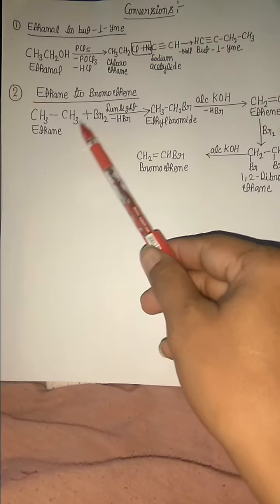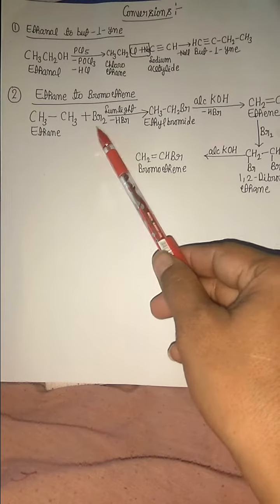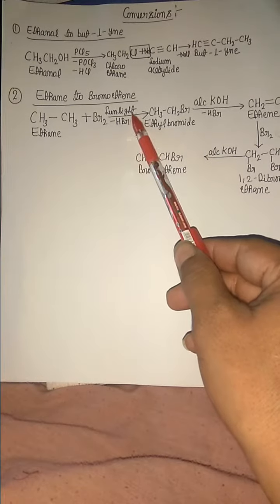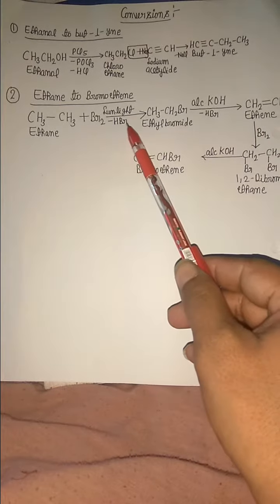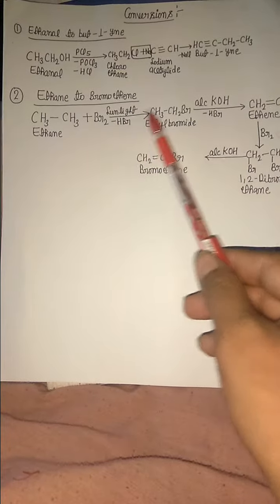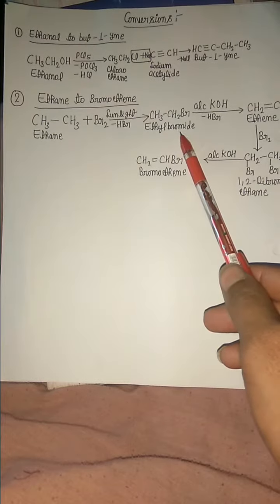In the conversion of ethane to bromoethane, ethane reacts with bromine in the presence of sunlight, and loses one hydrogen bromide molecule to form ethyl bromide.